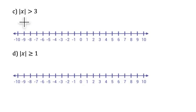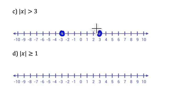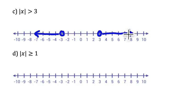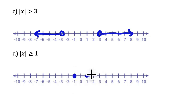Now let's switch the direction of the inequality. For the absolute value of x greater than 3, there's no equal bar, so we're not including 3 and negative 3 — open points there. Thinking back to the exploration, it was the numbers out beyond those points that satisfied the inequality. With a greater than sign, the arrows face away from each other. Same thing for greater than or equal to 1, except the border points are included — closed points at 1 and negative 1 — and the numbers greater than 1 or less than negative 1 satisfy the inequality.